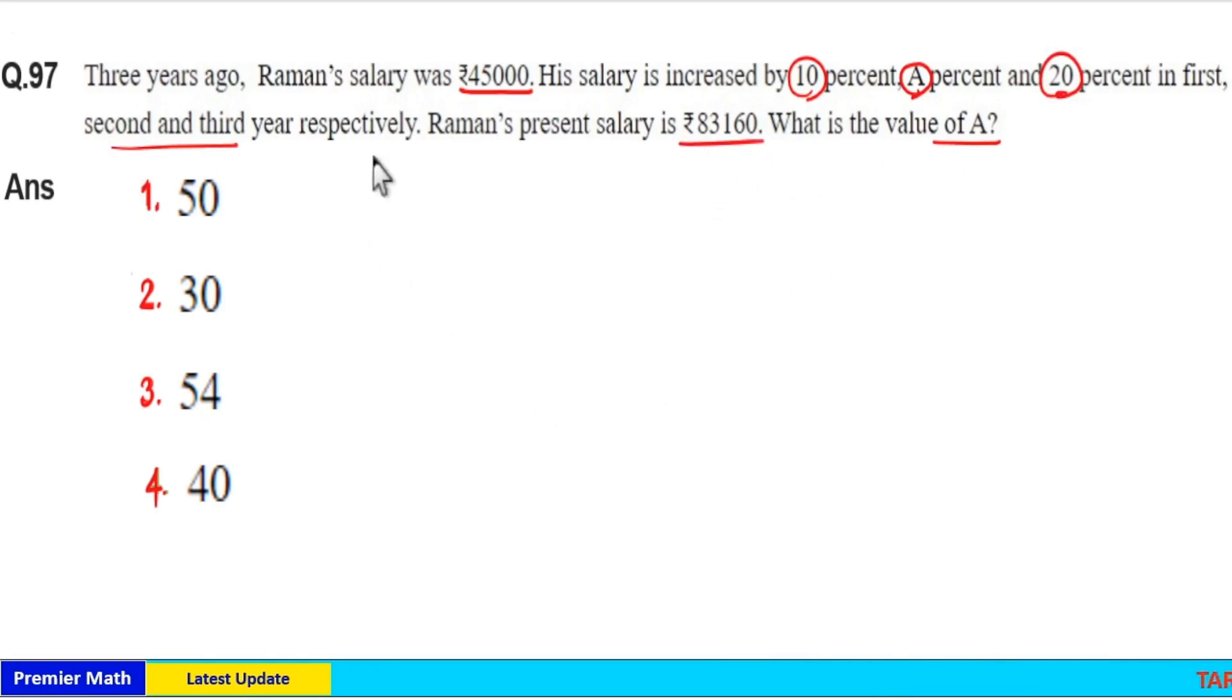Here, three years ago his salary was ₹45,000. Now in the first year his increment is 10%. Salary increased by 10% means if I take 100% as ₹45,000, then 10% increment means 100 plus 10, which is 110% increment. So 110% means 110 by 100. So 110 by 100 of ₹45,000 is the first year salary.